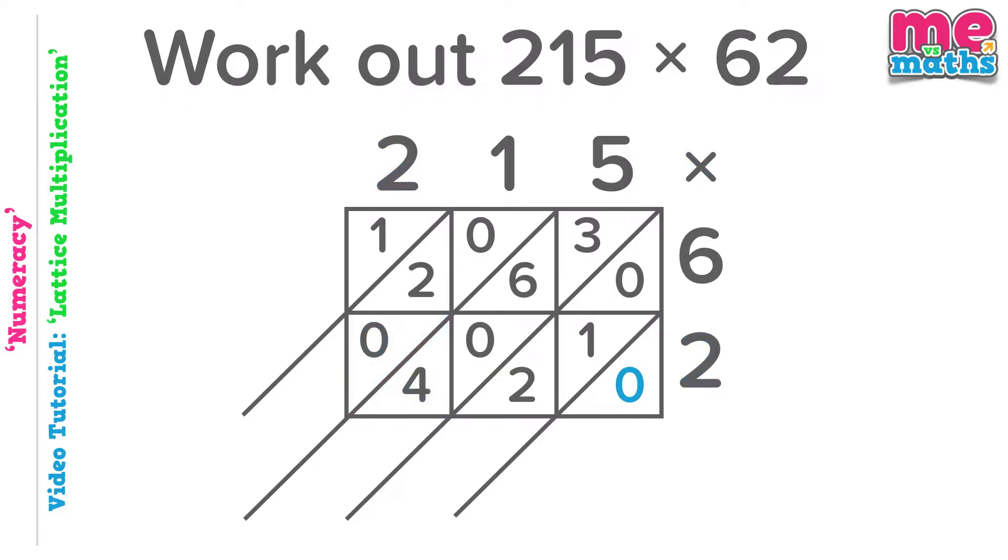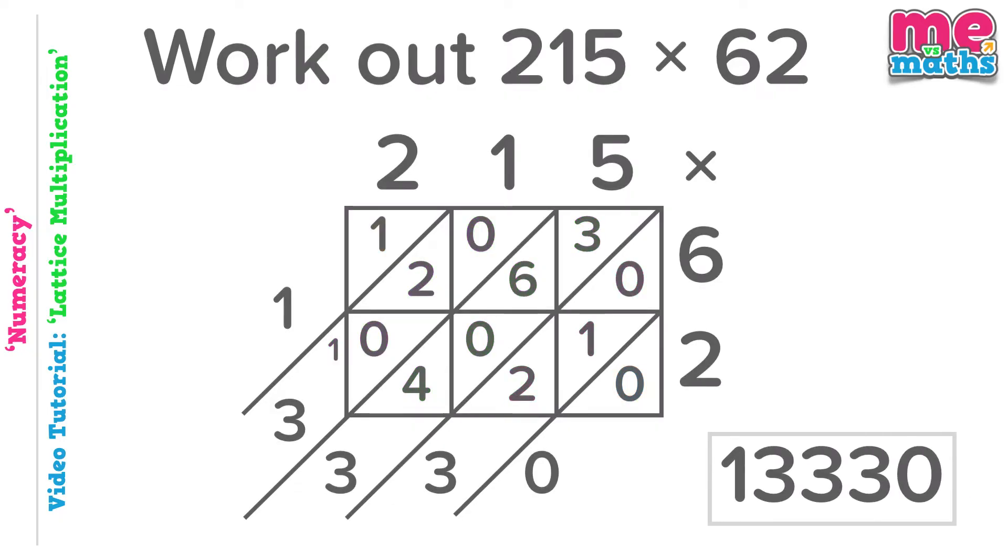Just as before, for our addition we're going to start in the bottom right hand corner where we just have a 0. Moving to the left, 0 add 1 add 2 will make 3. 4 digits to add in this column: 3 add 6 add nothing add 4 gives 13. So carry the 1 to the next column. 0 add 2 add 0 add 1 gives us 3 again. And lastly, always nice and easy finishing off with just a 1. Final answer then, 13,330.